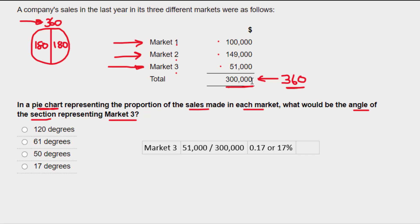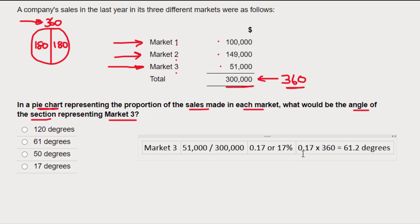...it comes out at 0.17, or 17 percent, which means that market three makes up 17 percent of total sales. Now what I need to do to turn that into degrees for the pie chart is take my 17 percent and apply it to the 360-degree total. 0.17 times 360 degrees comes out at 61.2 degrees.